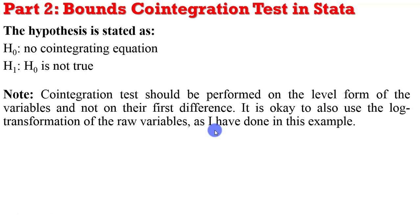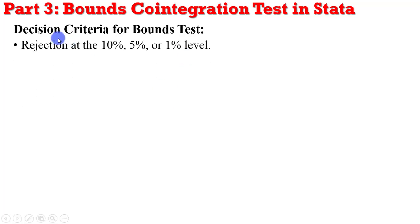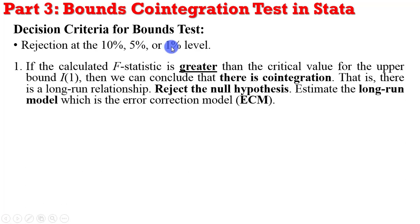So when performing the bounds test, perform it on the levels of the variables and not on their first difference. The decision criteria for the bounds test is that you can reject the null hypothesis at the 10%, 5%, or 1% significance level. If the F value is greater than the critical value for the upper bound, we conclude that there is cointegration. In that case, there is a long-run relationship between or among the variables.